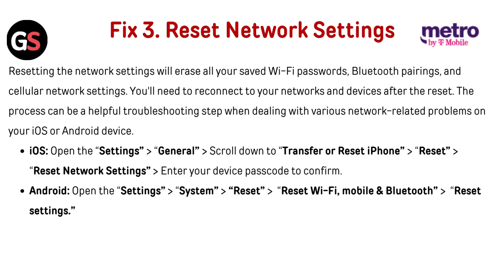Fix 3: Reset Network Settings. Resetting the network settings will erase all your saved Wi-Fi passwords, Bluetooth pairings, and cellular network settings. You will need to reconnect your networks and devices after the reset. This process can be a helpful troubleshooting step when dealing with various network-related problems on your iOS or Android devices.